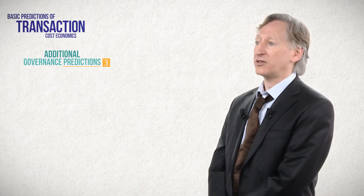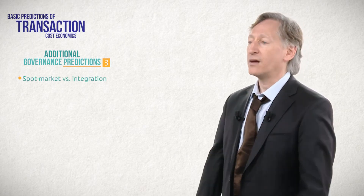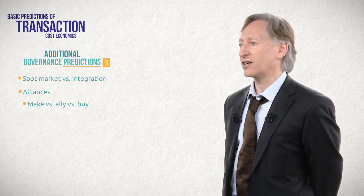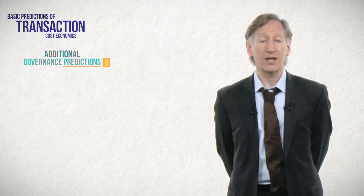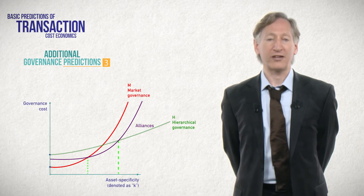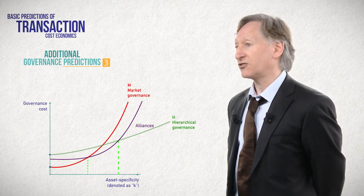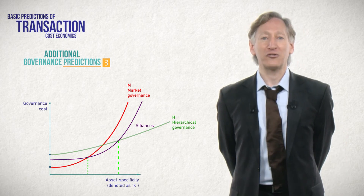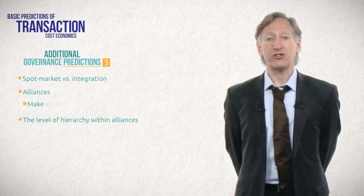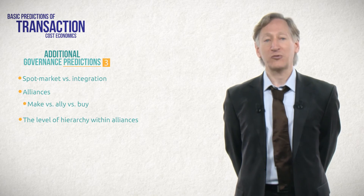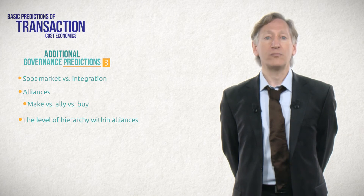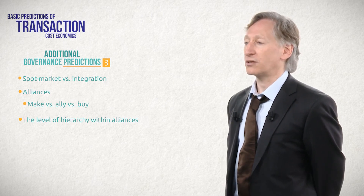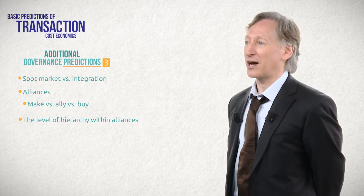Transaction cost logic has also been fleshed out to explicate several governance options in between the poles of spot market and integration. Interfirm alliances have been a topic of huge and enduring interest since the 1990s. How can we explain when a firm chooses to undertake some activity via an alliance, rather than through a market contract or entirely in-house? TCE has a prediction: transactions characterized by intermediate levels of asset specificity, and thus benefiting from both moderate incentive intensity and moderate controls to support coordinated activity and reduce fears of holdup, will be ripe for alliances. The theory also offers predictions regarding the level of hierarchy within alliances — increased asset specificity, increased risk of knowledge expropriation, and increased complexity of transacting will lead partners to arrange more firm-like alliances. Those with these features will include equity investments and, at the limit, stand-alone joint ventures in which each partner has veto power over many decisions.